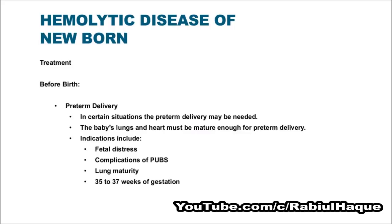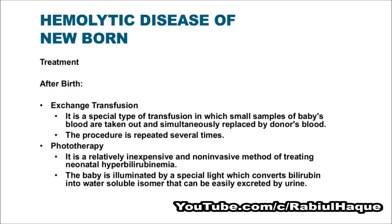Another treatment option is preterm delivery. In certain situations, preterm delivery may be needed, but always remember that the baby's lungs and heart must be mature enough. Indications will include fetal distress, complications of percutaneous umbilical blood sampling, lung maturity, and 35 to 37 weeks of gestation.